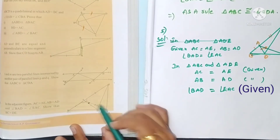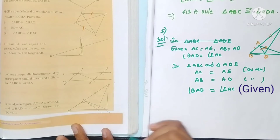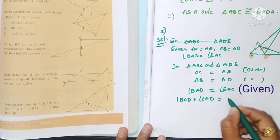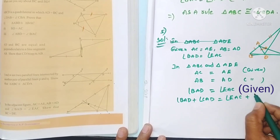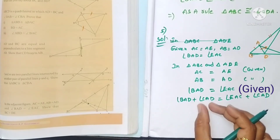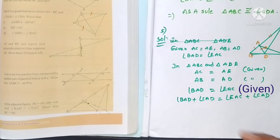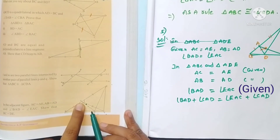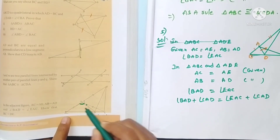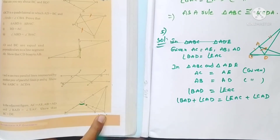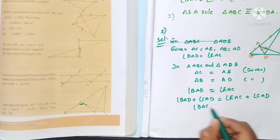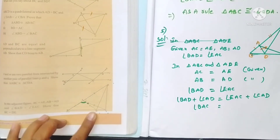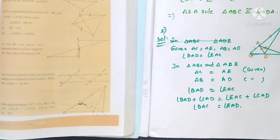Adding angle CAD to both sides: angle BAD plus angle CAD gives angle BAC, and angle EAC plus angle CAD gives angle EAD. So angle BAC is equal to angle EAD. Now we have two sides and the included angle equal.